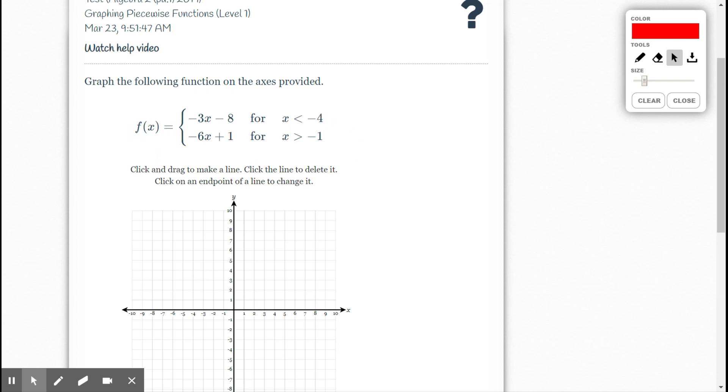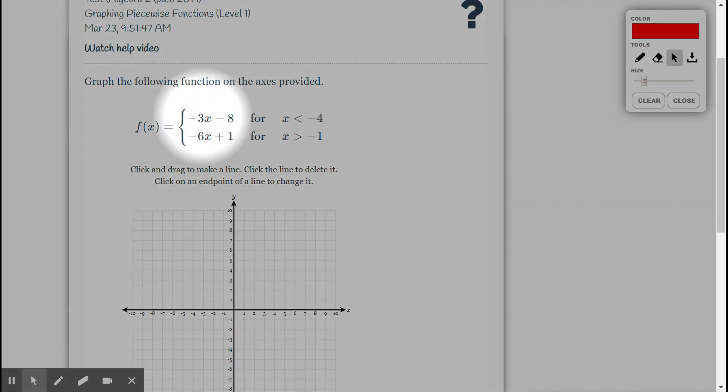So when we're reading a piecewise function, if we read the top one, it says f of x equals negative 3x minus 8 for all x values less than negative 4. So I'm going to imagine that's going to be for everything over here. Then it says f of x equals negative 6x plus 1 for all x values greater than negative 1. So that's going to be everything over here. There's going to be a little gap in the middle.